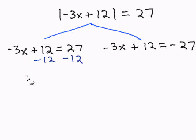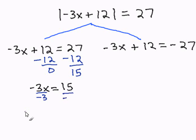Subtract 12 on both sides. I get 15. Rewrite my equation. Then I divide by negative 3 on both sides. My resulting answer is negative 5.